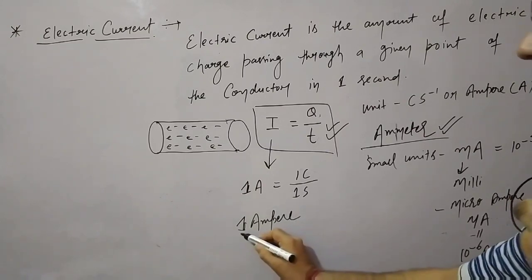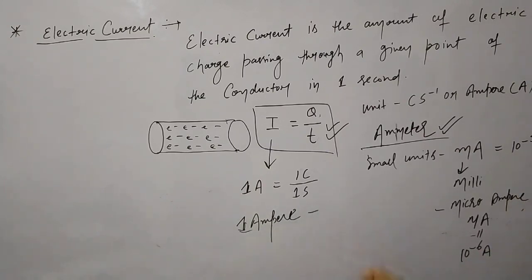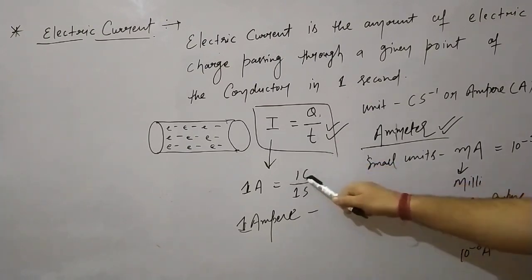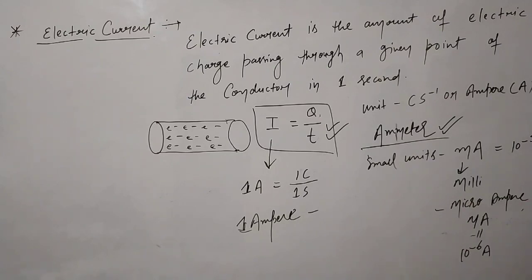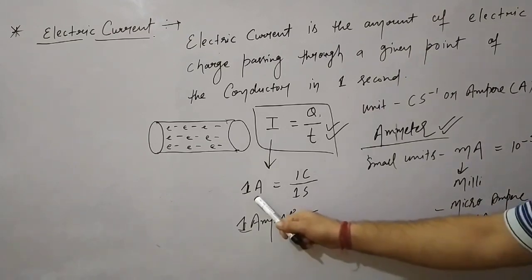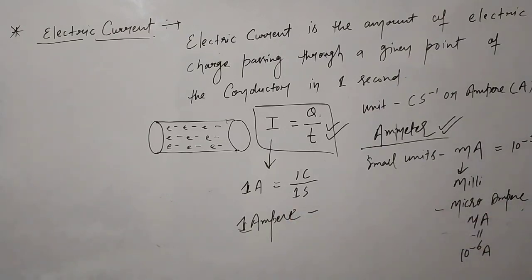Now if we talk about insulators — what are insulators? Insulators are those substances through which electricity cannot pass. The difference is: which substance allows electricity to pass is a conductor, and which substance does not allow electricity to pass is an insulator. Silver is the best conductor, copper is a good conductor.